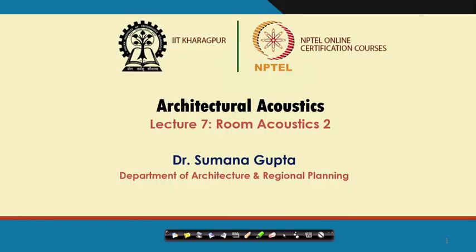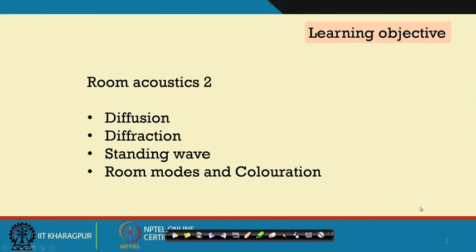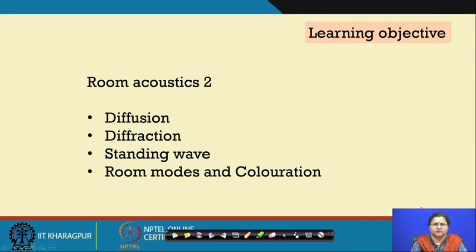Welcome back. We had a session of Room Acoustics 1, where we tried to understand the phenomena of reflection which happens within architectural spaces — we understood the drawbacks and problems with it and how we can take care of this. Now we move to Room Acoustics Part 2, which will deal with diffusion of sound, diffraction of sound, standing waves, room modes and coloration.